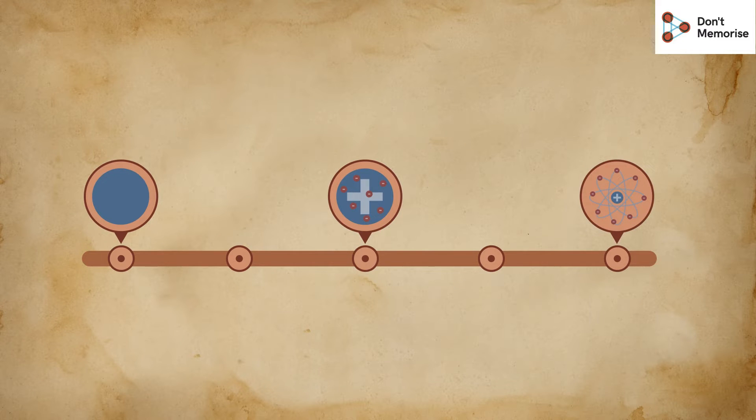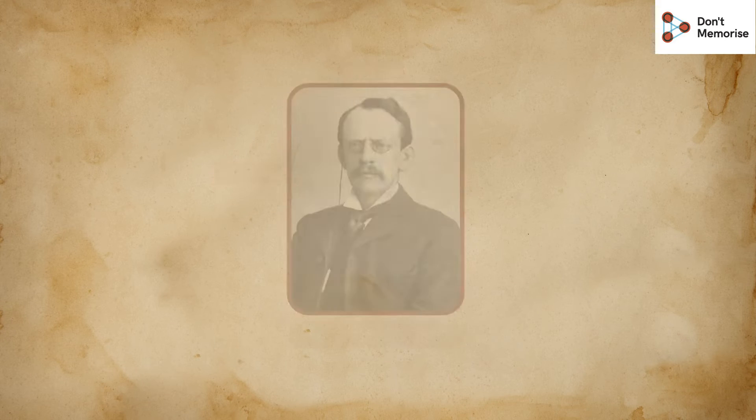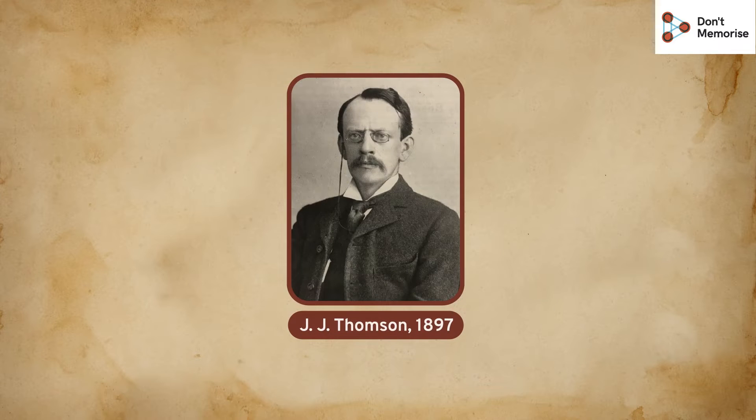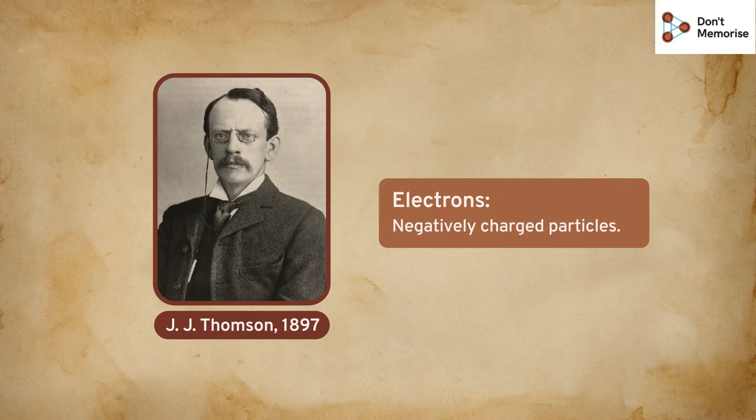The discovery of subatomic particles. In 1897, J.J. Thomson discovered negatively charged particles or electrons. But the confusion was: how can atoms be neutral if they consist of negatively charged particles?